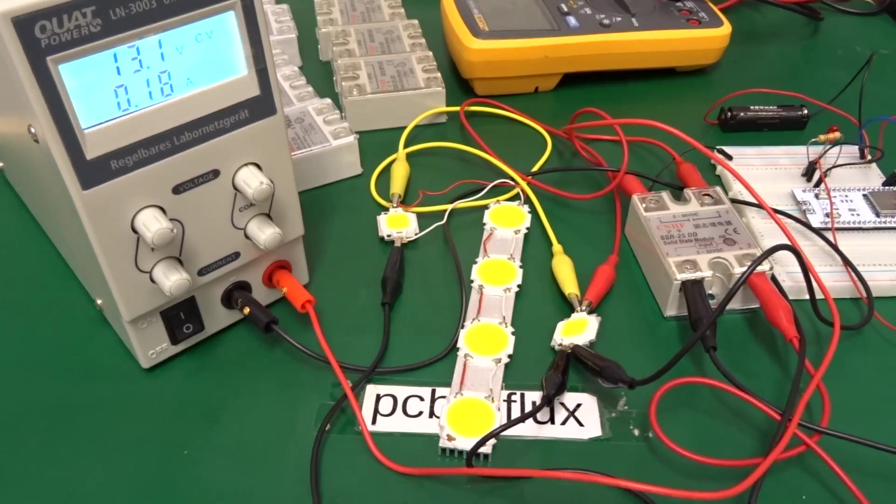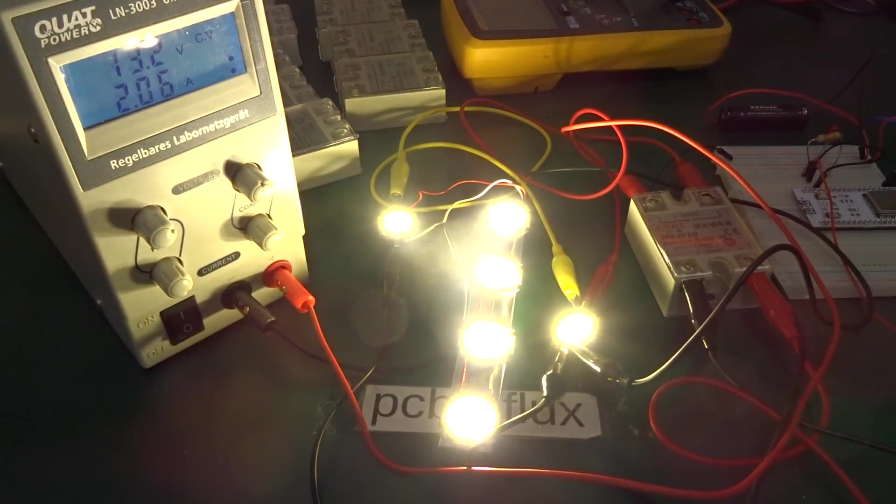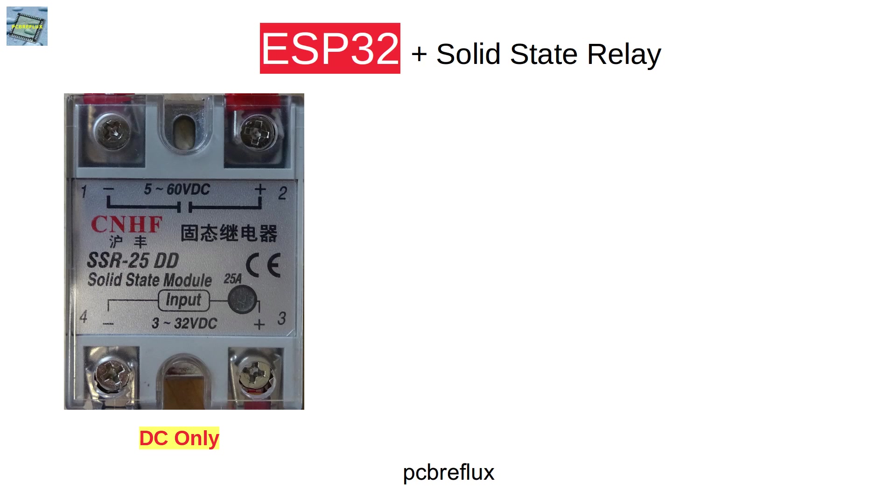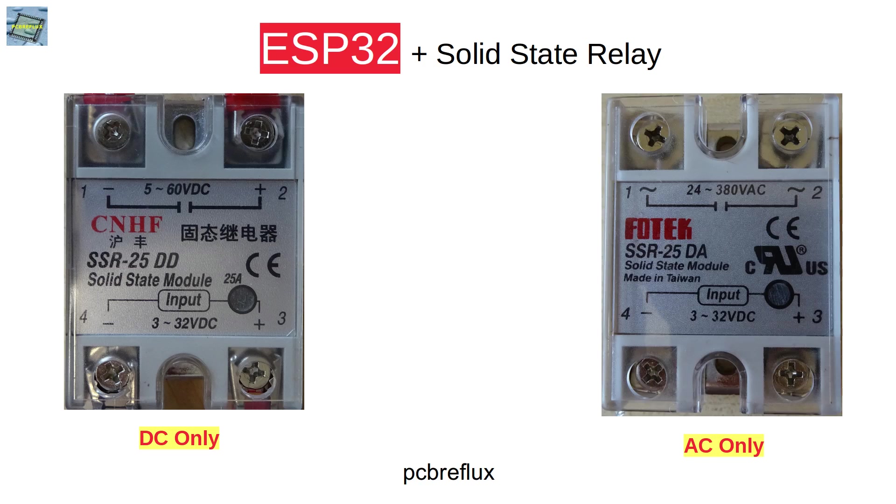Hi, today's topic is the ESP32 and switching heavy loads with a solid state relay or SSR. Typically you find two different types of SSRs, a DC-SSR and an AC-SSR.